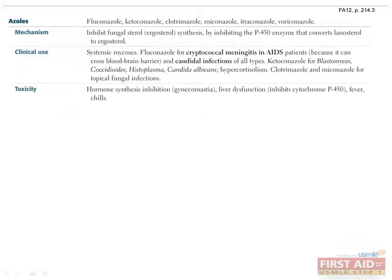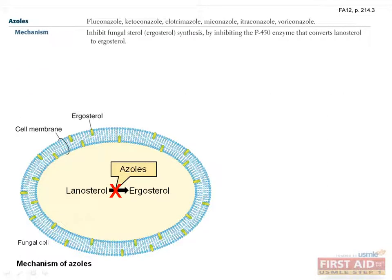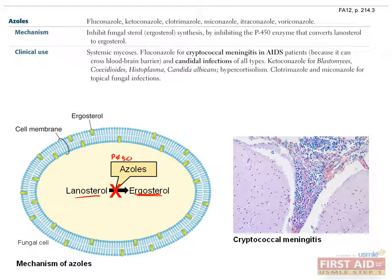The azoles all bear names ending in their drug class. Azoles work by inhibiting ergosterol synthesis through inhibition of the P450 enzyme that converts lanosterol to ergosterol. This is another class of antifungals reserved for systemic mycoses. Unlike amphotericin, the azoles have the ability to cross the blood-brain barrier, giving them utility in combating cryptococcal meningitis in AIDS patients.